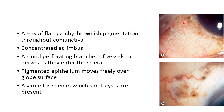Benign melanosis presents as areas of flat, patchy brownish pigmentation throughout the conjunctiva, usually concentrated at the limbus or around perforating branches of vessels or nerves as they enter the sclera. The pigmented epithelium moves freely over the globe surface. A variant of benign melanosis with small cysts has also been described.